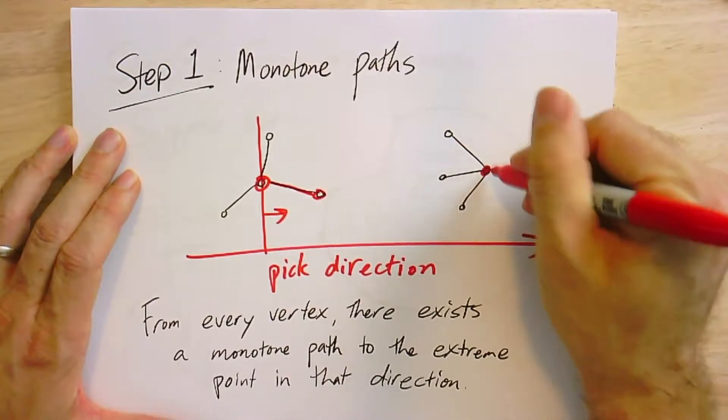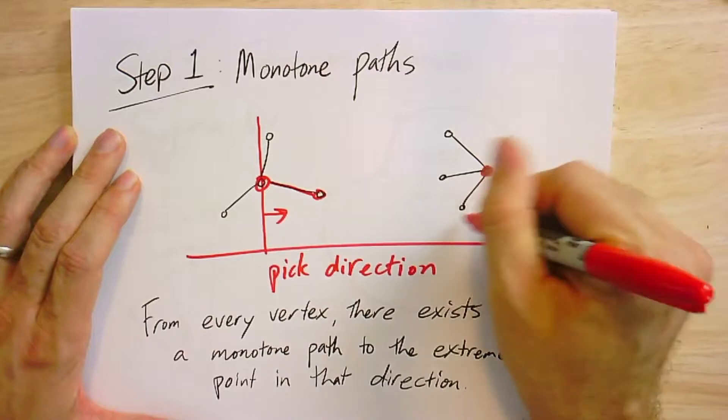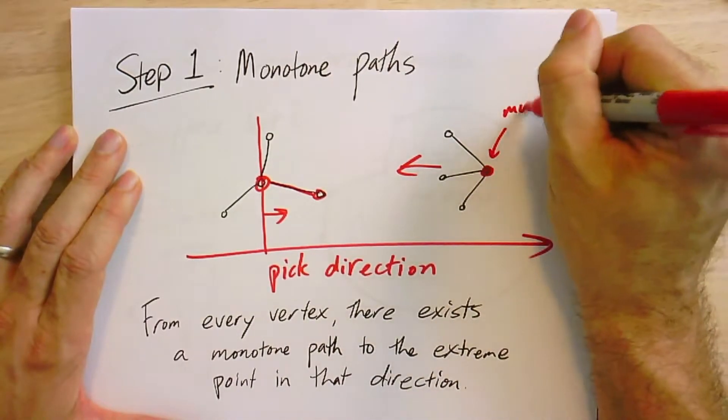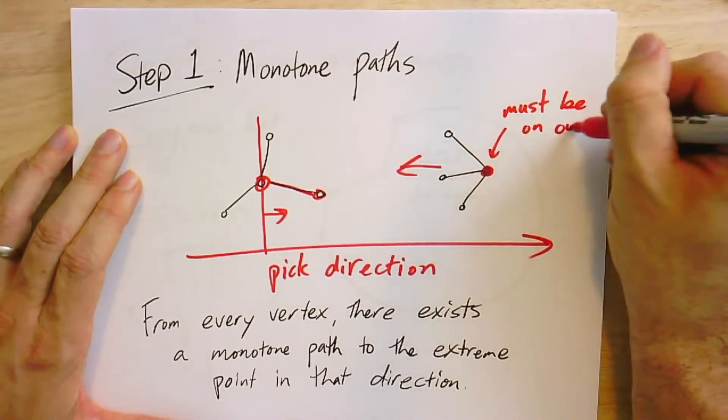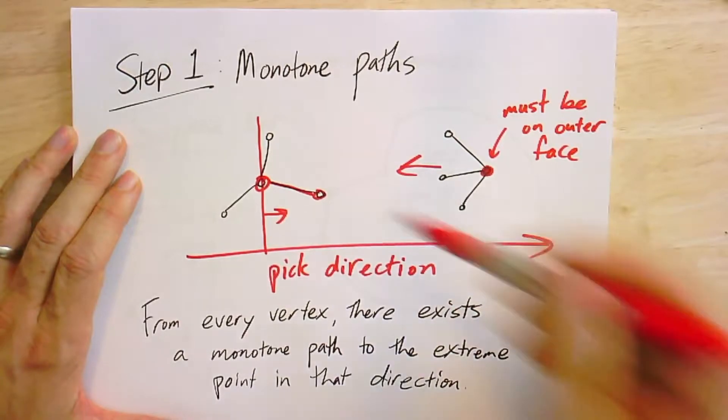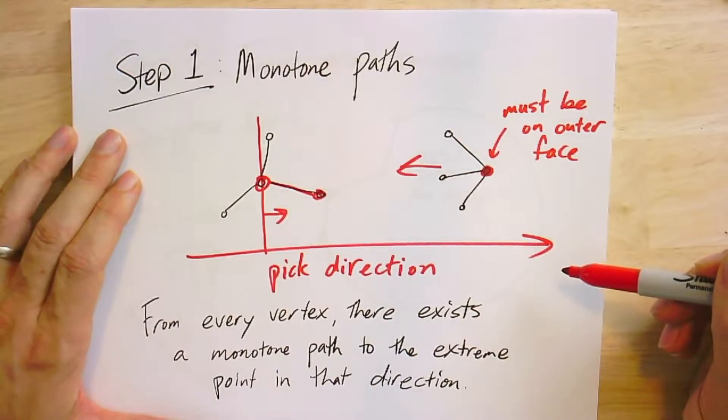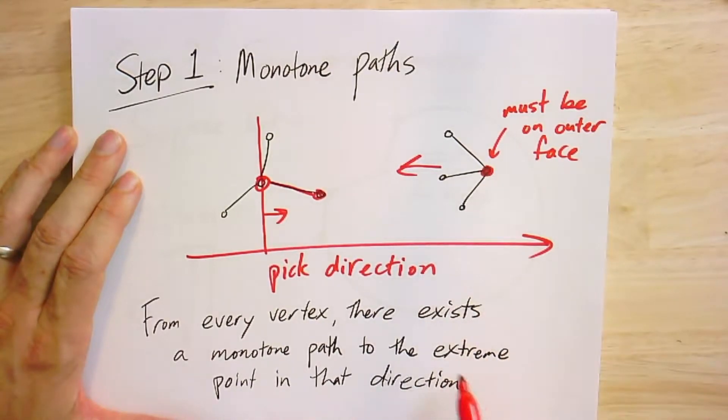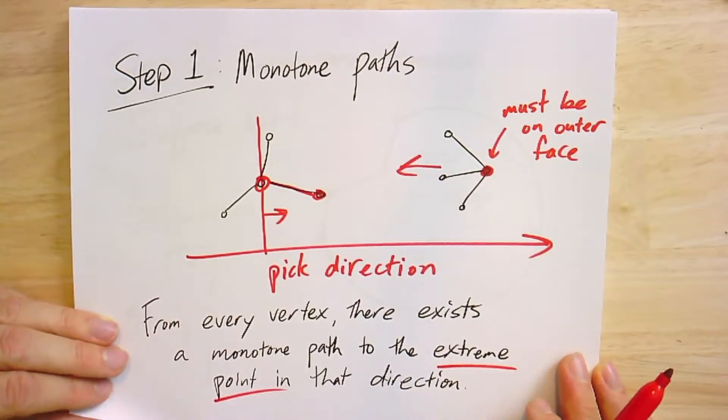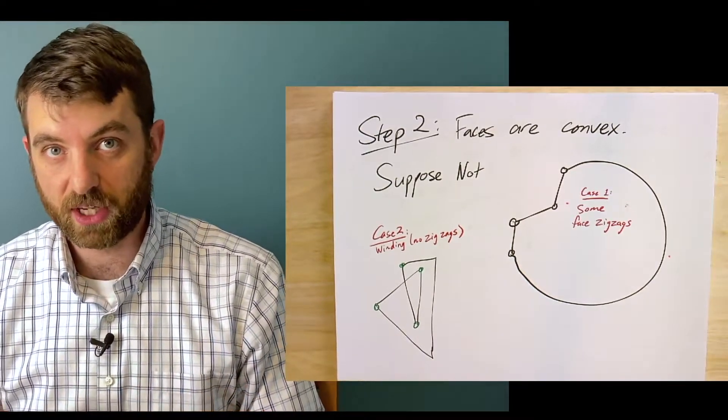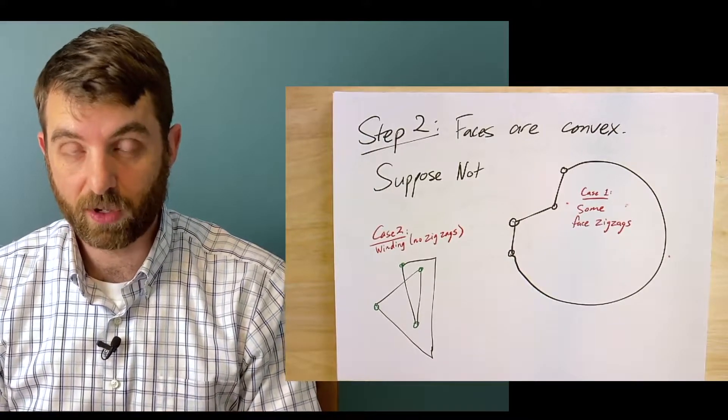There is one exception - at the boundary. This vertex must be on the outer face, one of our extreme vertices. So in any given direction, I can always go from vertex to vertex in a path through the graph, always moving monotonely in that direction. We call these monotone paths. Whenever I pick a vertex and a direction, I can always find a monotone path that will end at some extreme point on the outer face. We're going to use these monotone paths to show that the faces in the drawing all have to be convex polygons.